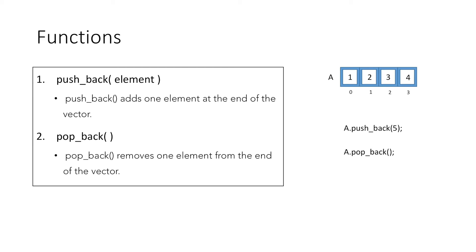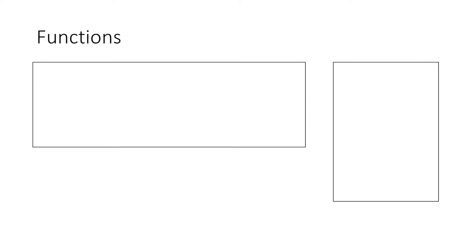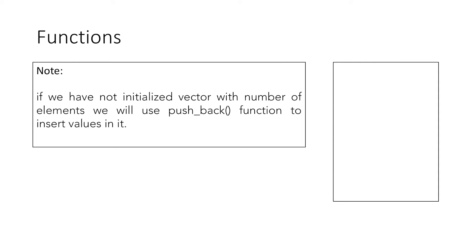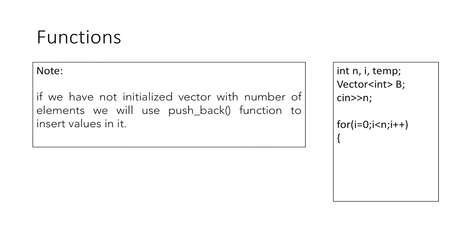Thus, by using push_back and pop_back, we can dynamically add and delete elements from our vector, which is not possible with arrays. One thing to note is, if we have not initialized our vector with a number of elements, we will use the push_back function to insert values, and we cannot directly input values using cin because no memory is allocated. So if we want to take the number of elements from the user, we can declare our vector 'b', take the number of elements n from the user, loop from 0 to n-1, input each value into a temporary variable temp, and push_back that variable into the vector for every input. In this way, we are dynamically adding elements to our vector.